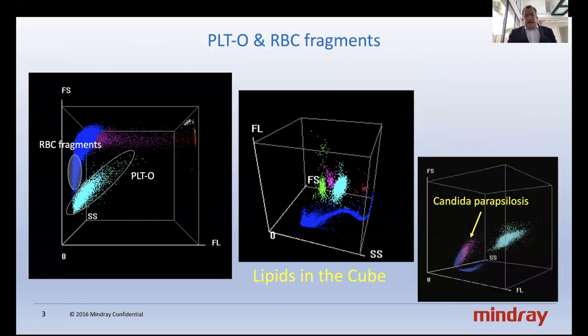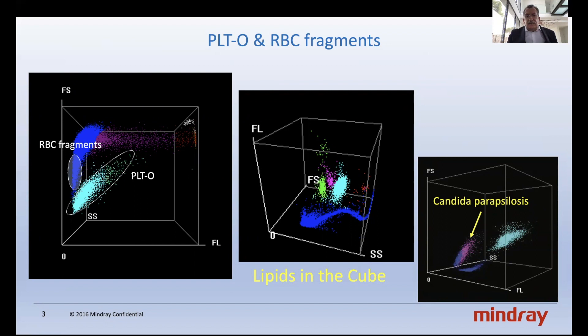Here we can see the histograms of optical platelets, showing how fragments and lipids can be differentiated using the Cube from other interferences. The presence of Candida also appears as an abnormal pattern of erythroblasts. If you train your lab technicians and have a poster with examples nearby the instrument, that will help to detect these interferences. When you use optical platelets, these particles — which don't have nucleic acids — are not counted as platelets.